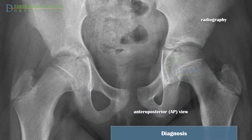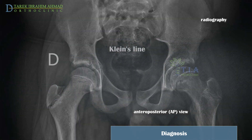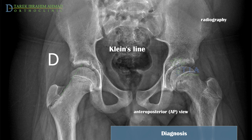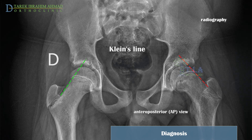On the anteroposterior view, there may be mild widening, lucency, and irregularity of the physis. In the normal anteroposterior view, a line drawn along the superior femoral neck intersects the lateral portion of the femoral head. In a patient with SCFE, the line passes outside of the epiphysis or just at its superior edge.